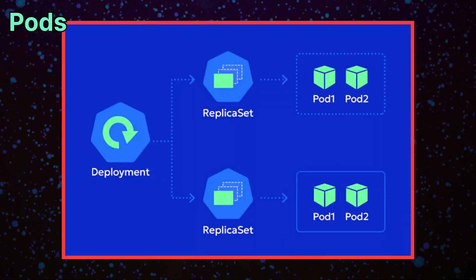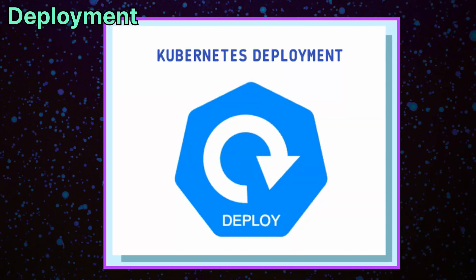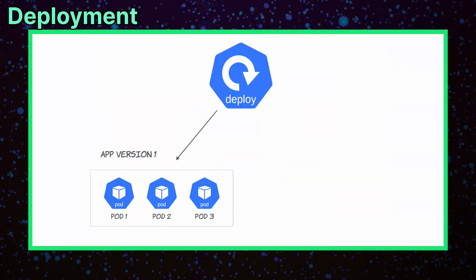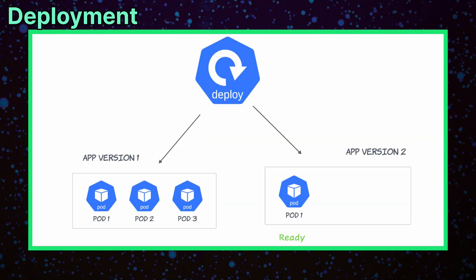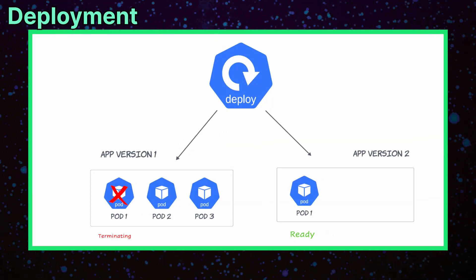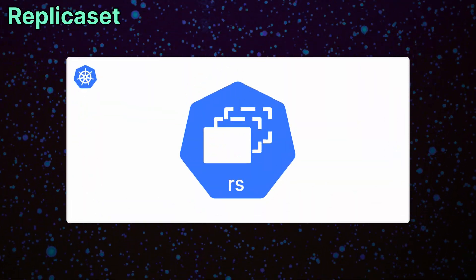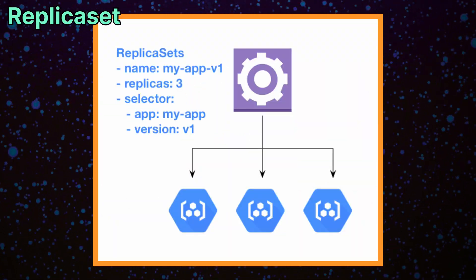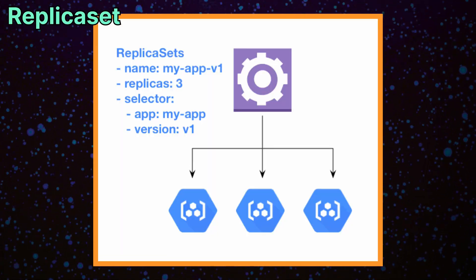To run pods more reliably, Kubernetes has controllers. A deployment is the most common controller — it makes sure that the right number of pods are running, supports scaling up and down, and allows rolling updates and rollbacks. Underneath the deployment is a replica set, which maintains a specified number of pod replicas by automatically creating or deleting pods as needed.